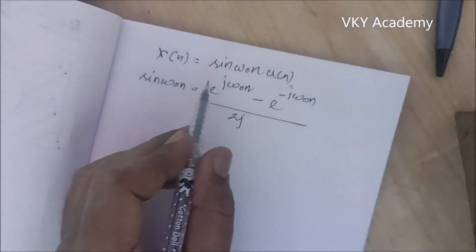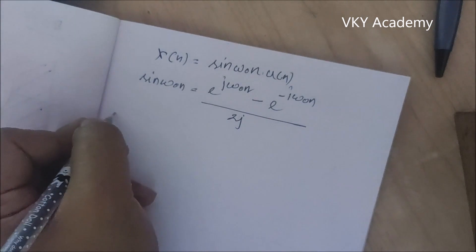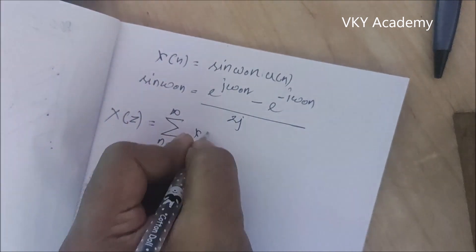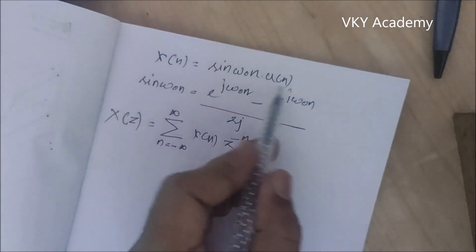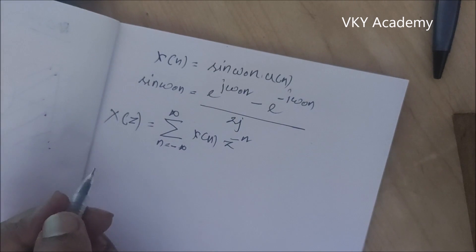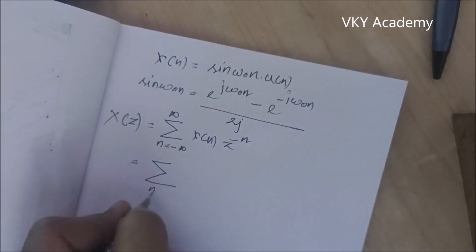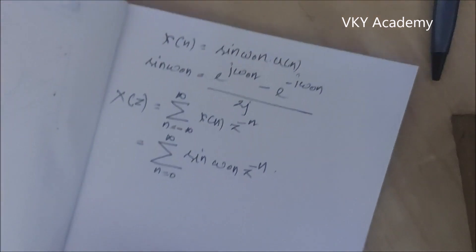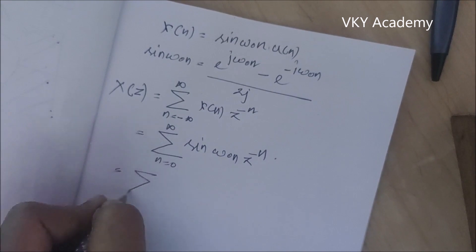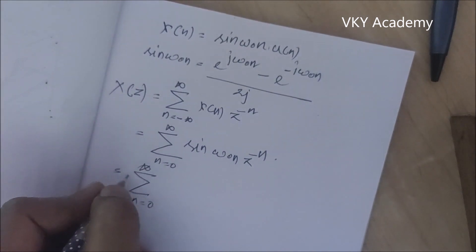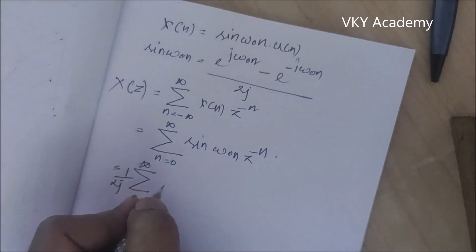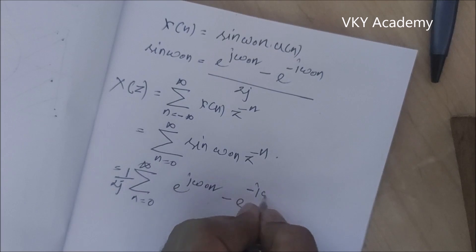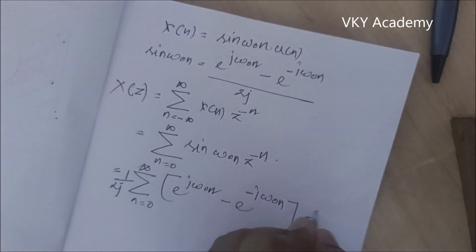We will substitute this result into the Z-transform definition. As we know, X(z) = summation from n = −∞ to ∞ of x(n)z^(−n). Since u(n) is a unit step function, the summation runs from n = 0 to ∞. So we have summation from n = 0 to ∞ of sin(ω₀n)·z^(−n), which becomes summation from n = 0 to ∞ of (1/2j) times [e^(jω₀n) − e^(−jω₀n)]·z^(−n).